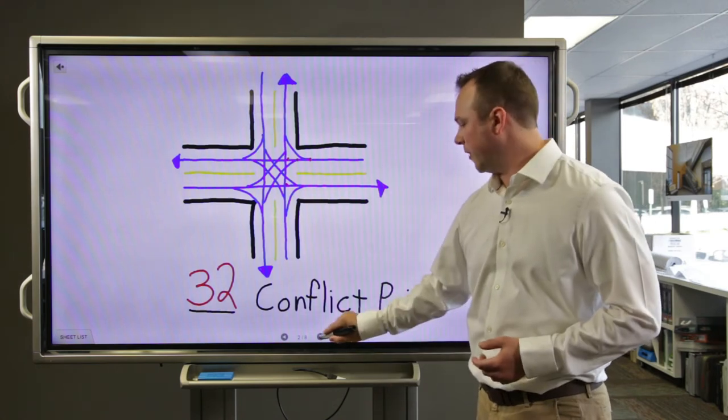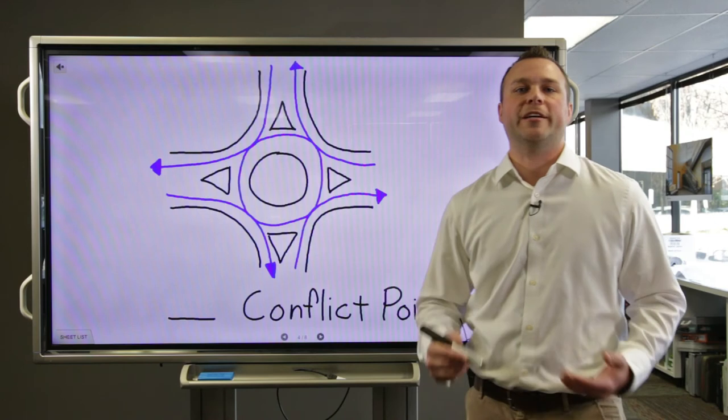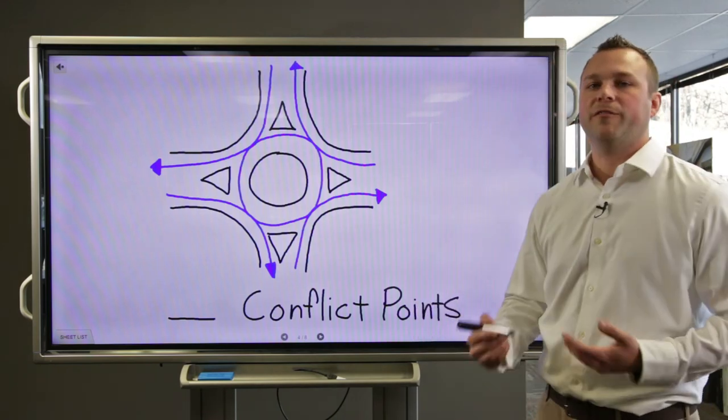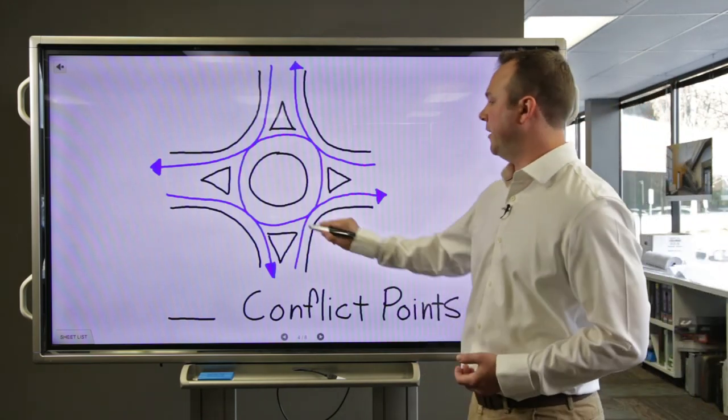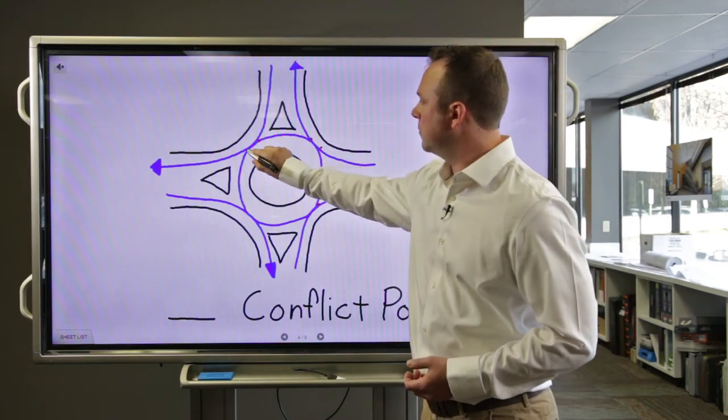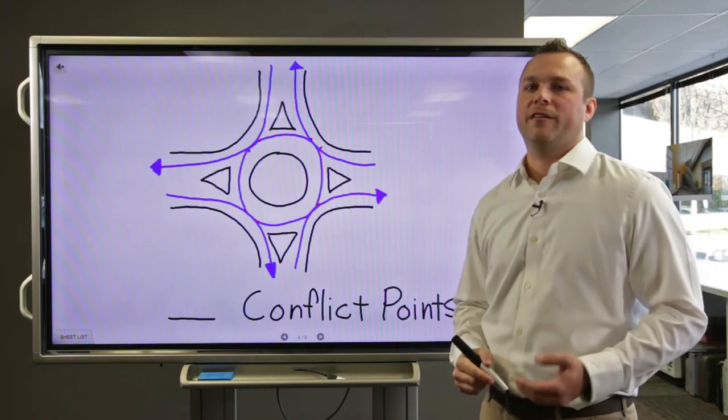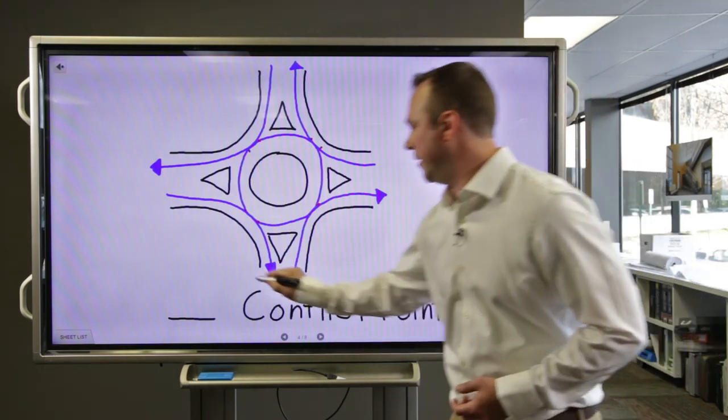Now let's look at a single lane roundabout. If we do the same exercise, we find that the only conflict points are where vehicles are entering and exiting, leaving a total of eight conflict points in a single lane roundabout.